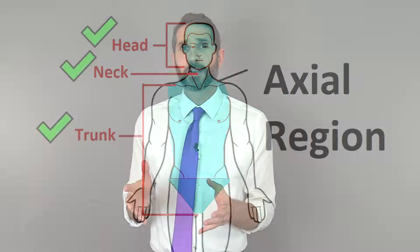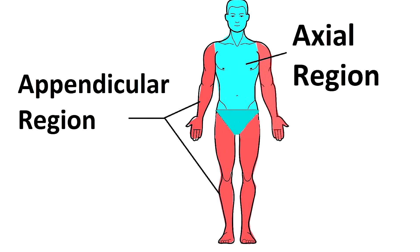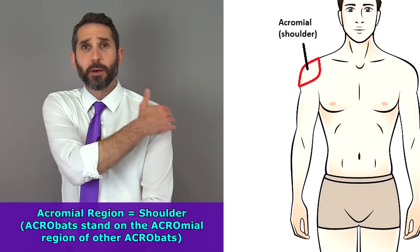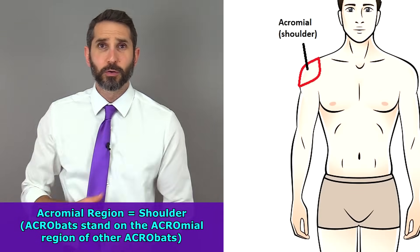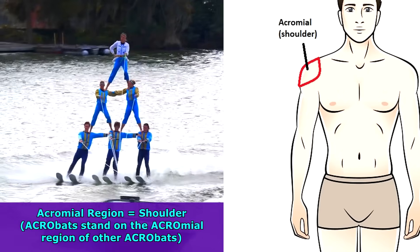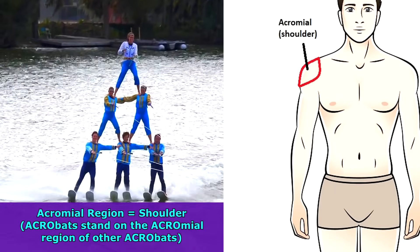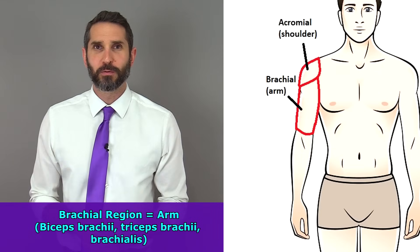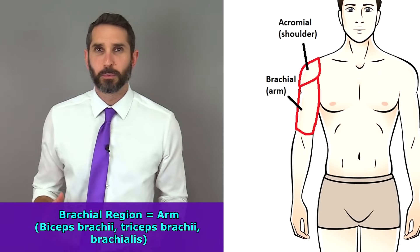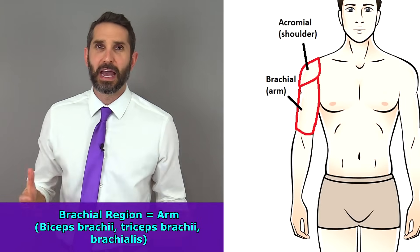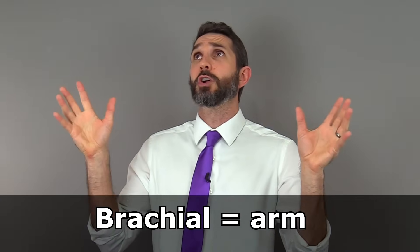Now let's shift to the appendicular region, starting at the upper arm. There's a little bony part of your shoulder called the acromial region — you'll sometimes see acrobats stand on the acromial region of other acrobats. Next, the brachial region refers to the arm, where you have muscles called biceps brachii, triceps brachii, and the brachialis. Brachial means arm.